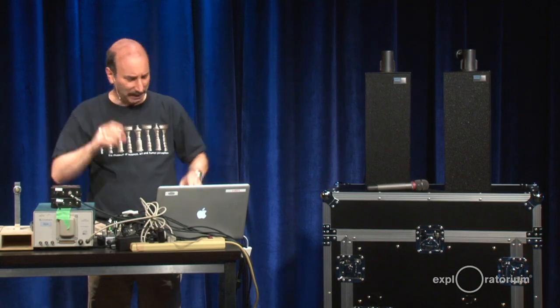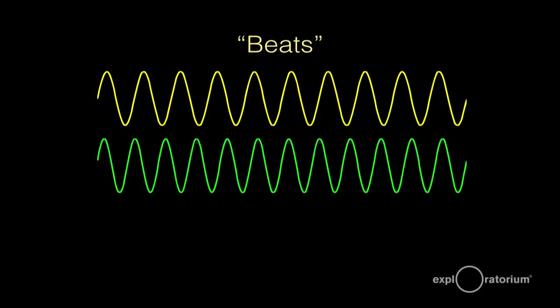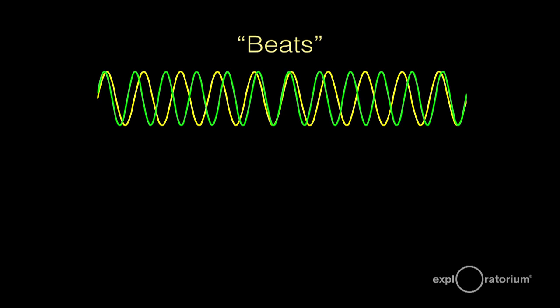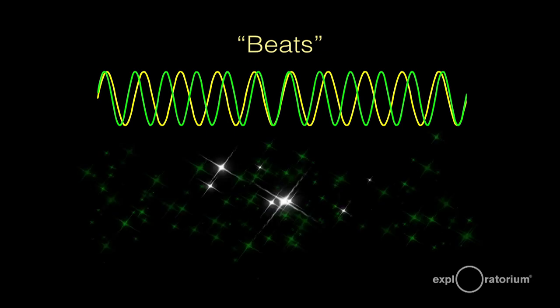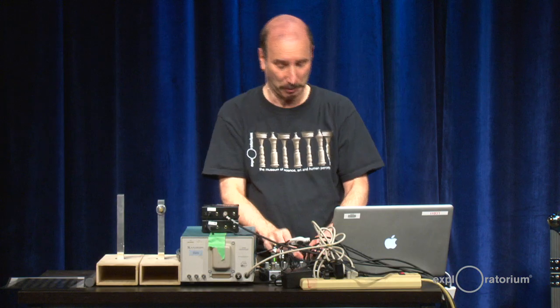That warbling is called beats. Here I have a diagram with two different waves — the green one is a slightly higher pitch than the yellow one. If I line them up and overlap them, you'll notice that at first they're crest to crest, trough to trough. But as you move across the screen, they get out of phase, then back in phase, constructively and destructively. That makes something called a beat note, where the waves get in and out of alignment or phase with each other.